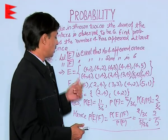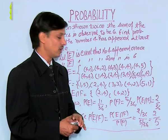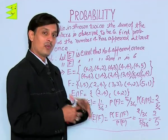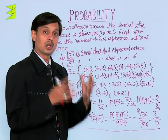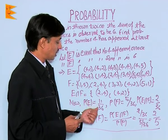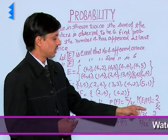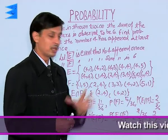Now, P(E): there are 11 favorable events where 4 appears at least once. When a pair of dice is rolled, the total sample space is 36. So probability of E is 11/36, probability of F is 5/36, and the intersection has 2 outcomes, so P(E∩F) is 2/36.